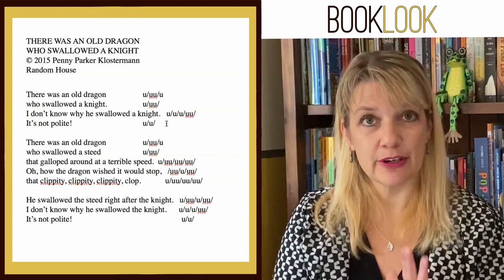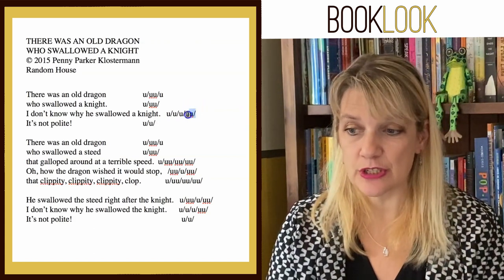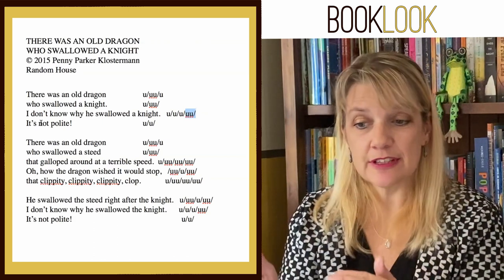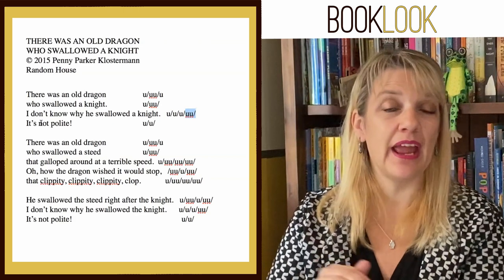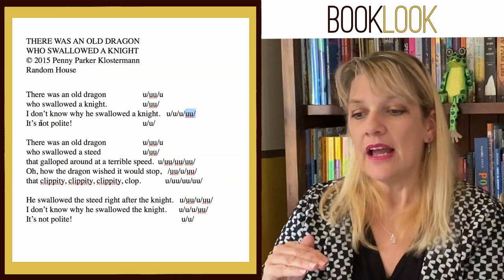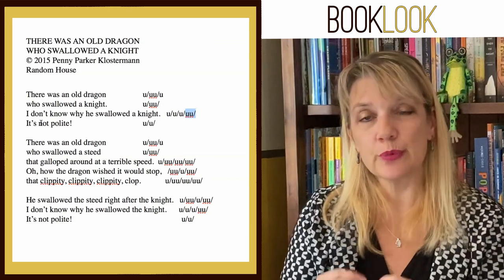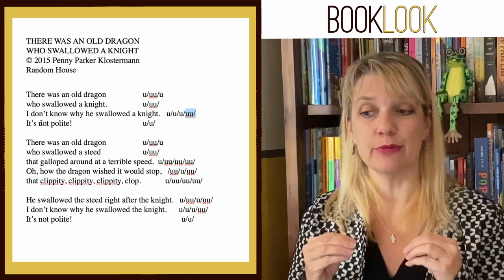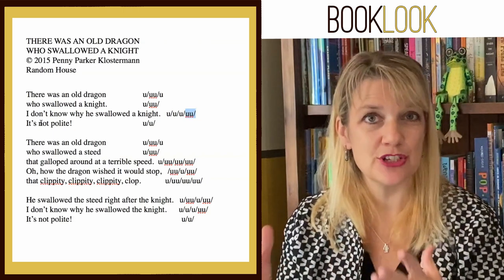Then we have a variation — it's iambic: 'I don't know why he swallowed a knight,' except for that last foot which is anapestic. And 'It's not polite' is iambic. These two lines become the refrain. She comes back to these two lines in iambic meter at the end of every stanza, and the stanzas get longer and longer as the dragon swallows more stuff — because again, this is a cumulative rhyme. We always come back to the knight and 'It's not polite' in iambic meter. I've mentioned in the past that varied meter can work, especially if you use it in a refrain, and I think Penny does a great job of that.